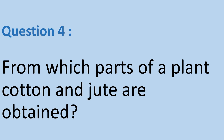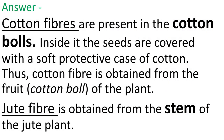Question number 4. From which parts of a plant are cotton and jute obtained? Answer: Cotton fibers are present in the cotton balls. Inside it, the seeds are covered with a soft protective case of cotton. Thus, cotton fiber is obtained from the fruit, i.e., the cotton ball of the plant. Whereas jute fiber is obtained from the stem of the jute plant.